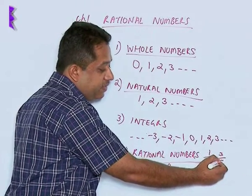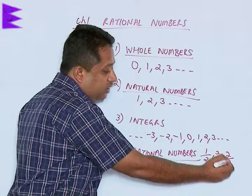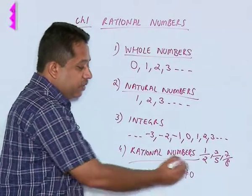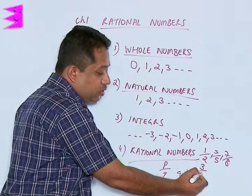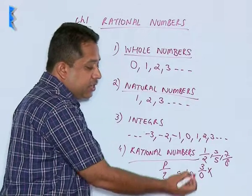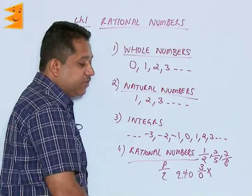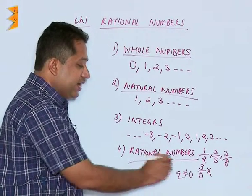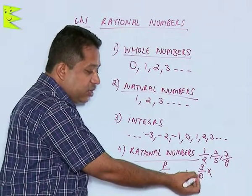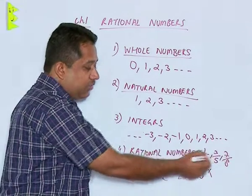But when we take 3 upon 0, it is not a rational number because it is impossible for us to divide any number by 0, because the result is infinity or not defined. So except for this case where the denominator is 0, all other fractions can be considered as rational numbers.